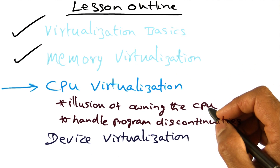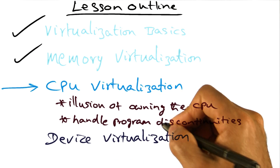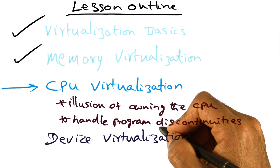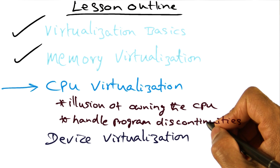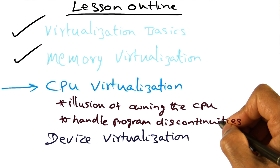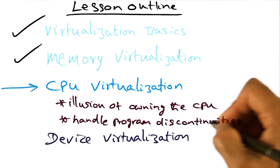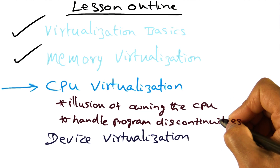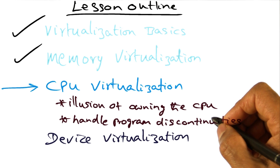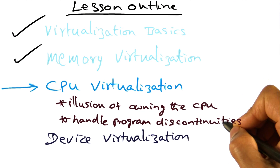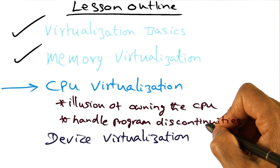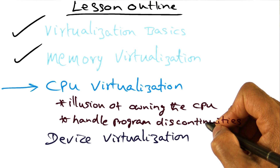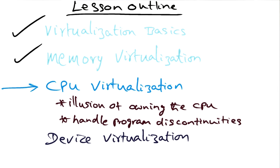The second part is we want the hypervisor to field events arising due to the execution of a process that belongs to a parent guest operating system. In particular, during the execution of a process on the processor, there are going to be discontinuities that will occur. Those program discontinuities have to be fielded by the hypervisor and passed to the right guest operating system.